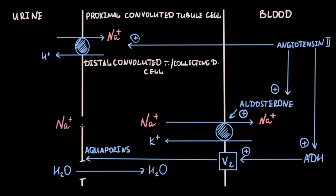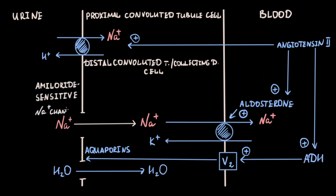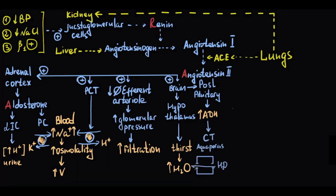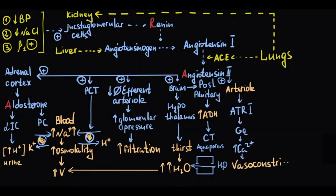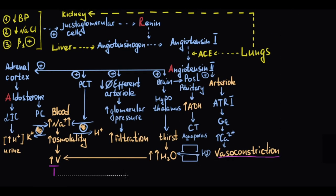The amiloride-sensitive sodium channel, though not directly part of the RAAS, is the mechanism by which sodium can enter the renal epithelium in the collecting duct. Finally, angiotensin-2 provides vasoconstriction in systemic arterioles by binding to angiotensin receptor type 1, increasing intracellular calcium and causing vasoconstriction, thereby increasing total peripheral resistance. Both increasing blood volume and total peripheral resistance cause an increase in blood pressure.